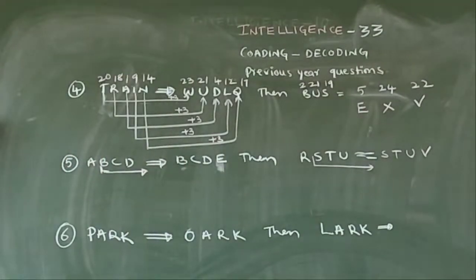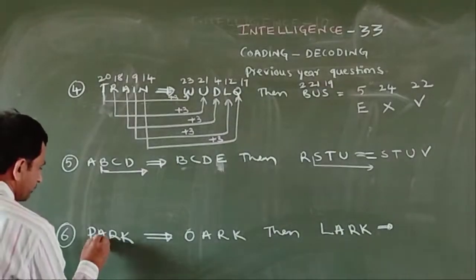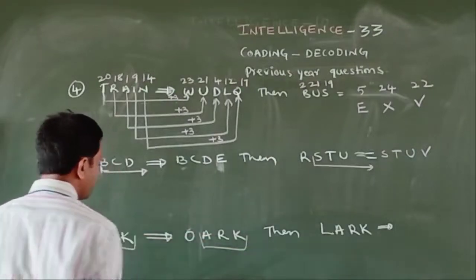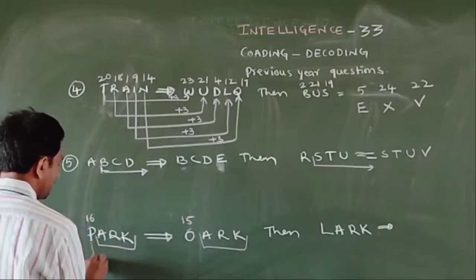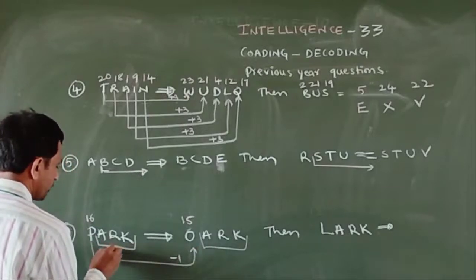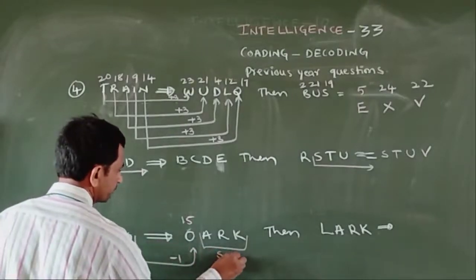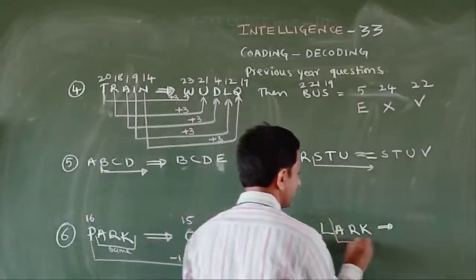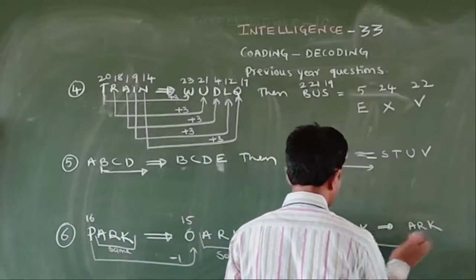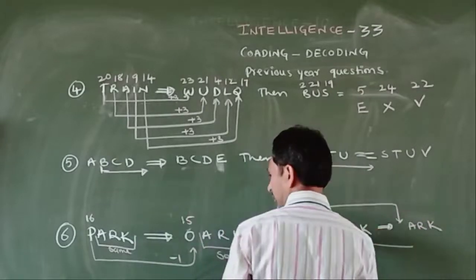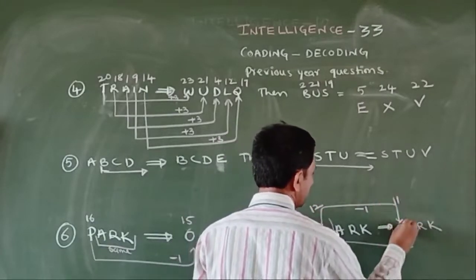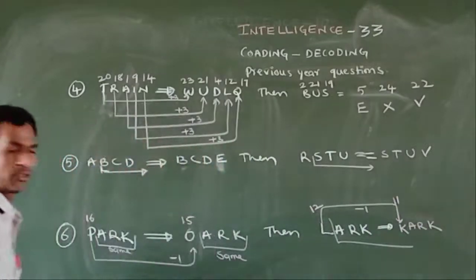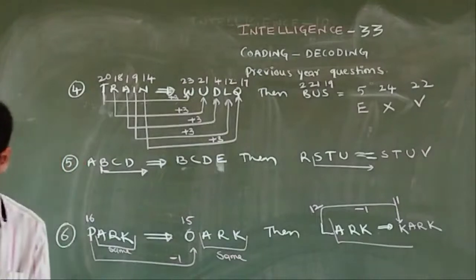Next, PARK. PARK is coded as OARK. ARK is the same. P is 16, O is 15. That means minus 1 relation. ARK will be same. PALL: L is 12, 12 minus 1 is 11, which is K. So answer is KARK.